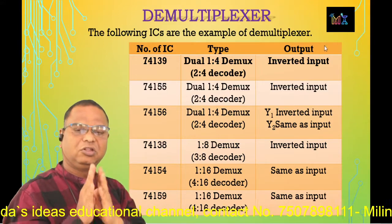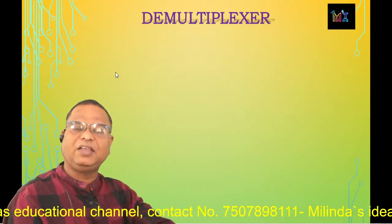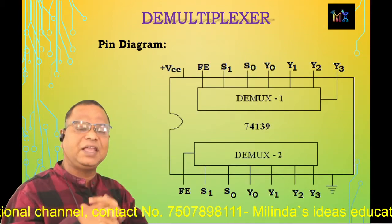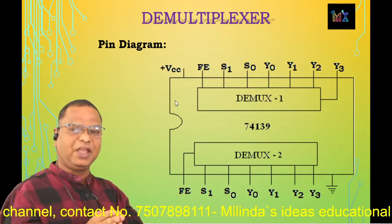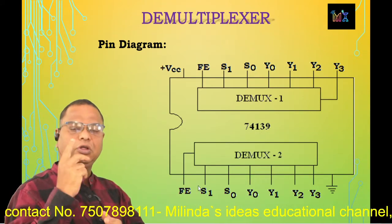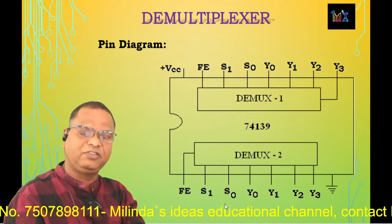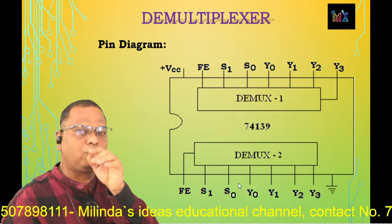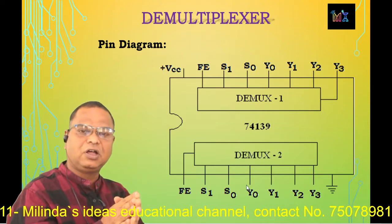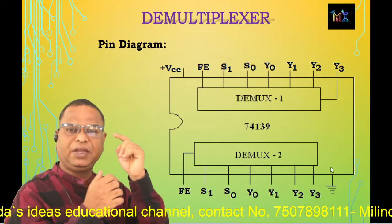From this table, the first IC — IC 74139 — is part of our syllabus. We will study its pin diagram, pin configuration, and truth table. IC 74139 is a 16-pin DIP (dual in-line plastic package) IC. Pin 1 is the strobe input (F̄Ē) of the lower demux. Pin 2 is select input S1, pin 3 is select input S0, because it is a 1-to-4 decoder with two control lines S1 and S0. Pins 4, 5, 6, and 7 are the respective output terminals Y0, Y1, Y2, and Y3.